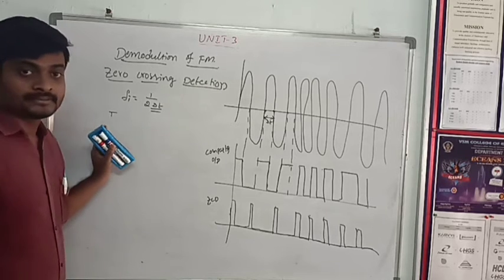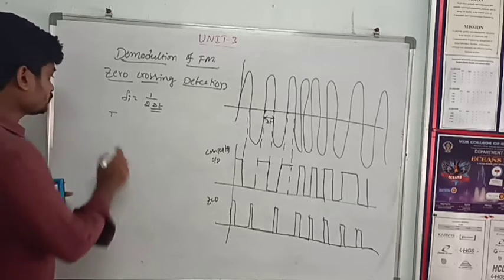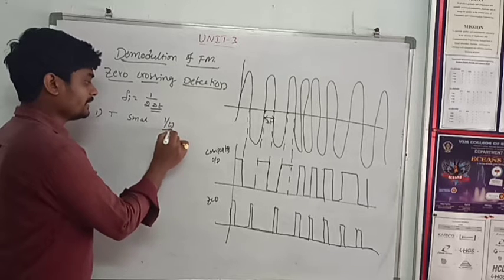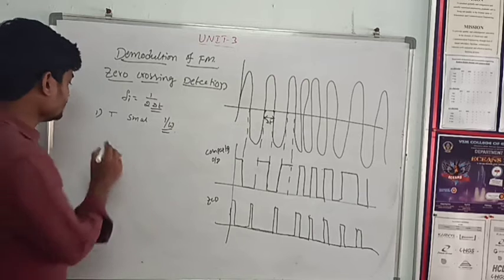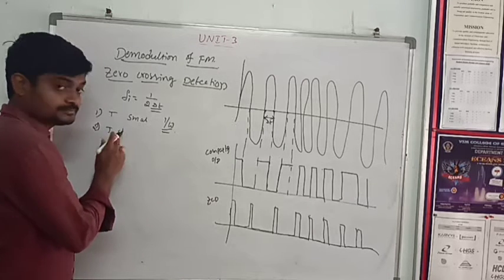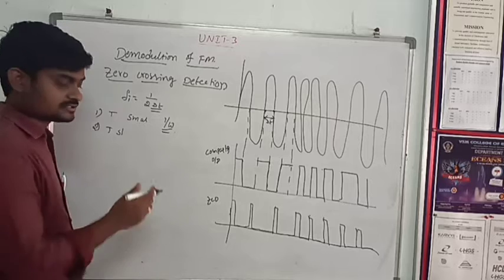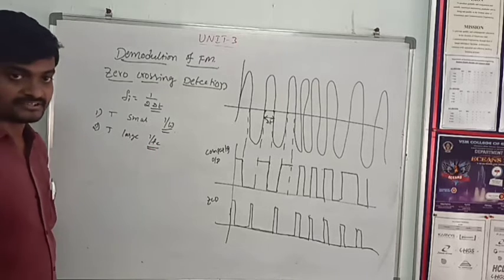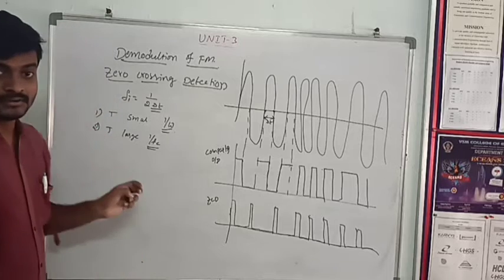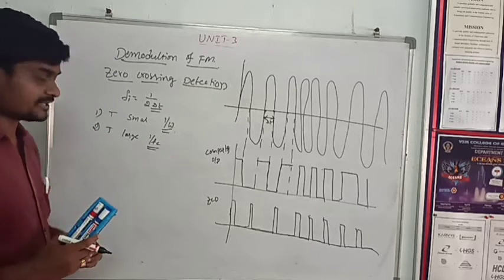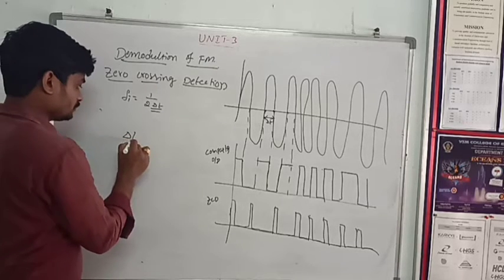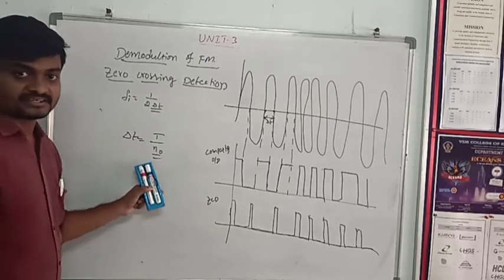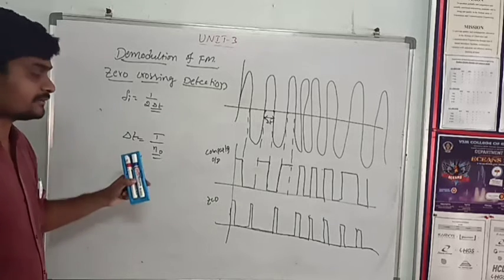The time interval T is chosen such that T should be small compared to 1 by omega, where omega means the bandwidth of the message signal. And second, T should be large compared to 1 by Fc, where Fc means the carrier frequency. The number of zero crossings during the time interval T is denoted by delta T equal to T by N0, where N0 is the number of zero crossings during the time interval T.